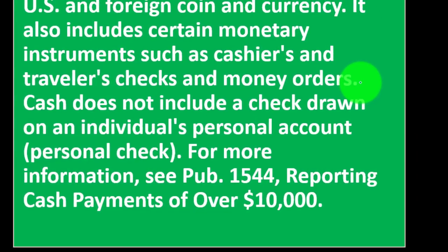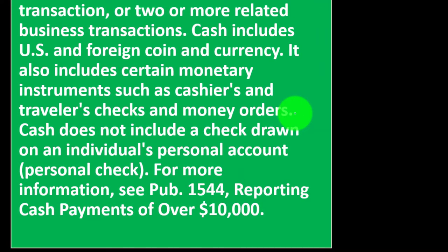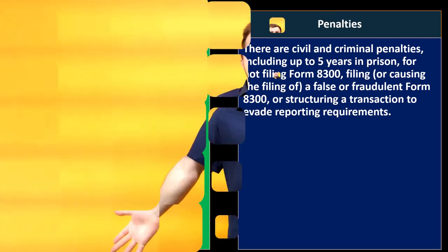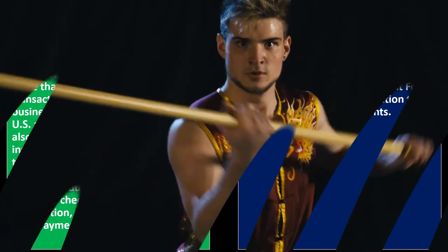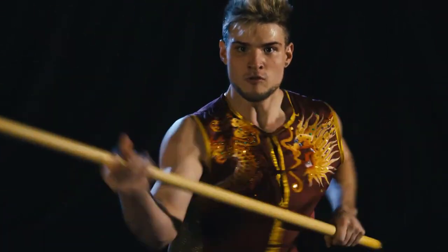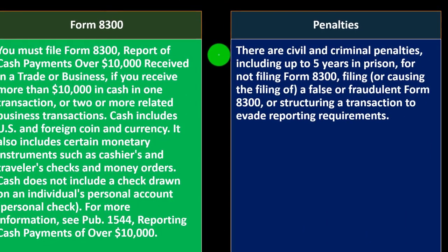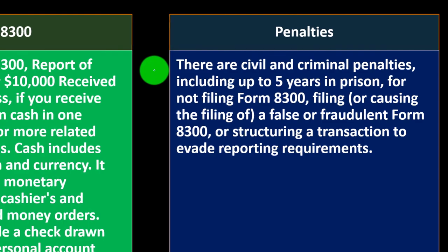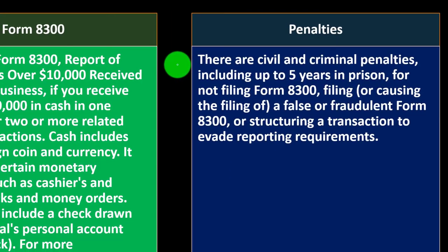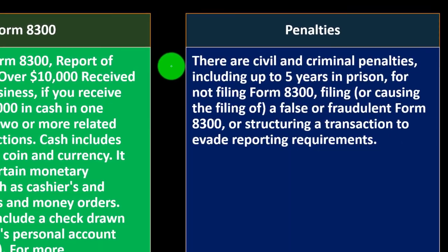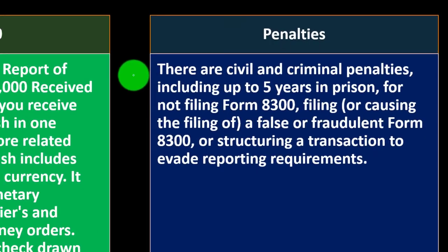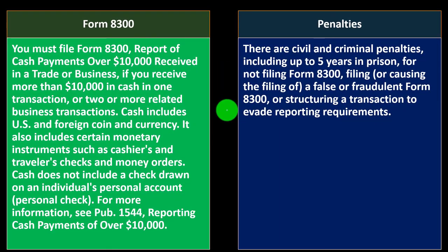Cash does not include a check drawn on an individual's personal account. For more information, see Publication 1544, Reporting Cash Payments Over $10,000. As for penalties — there are civil and criminal penalties, including up to five years in prison, for not filing Form 8300. And filing or causing the filing of a false or fraudulent Form 8300, or structuring a transaction to evade reporting requirements, also carries serious penalties.